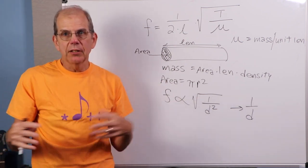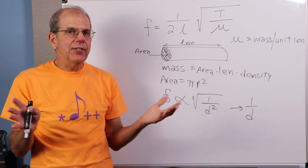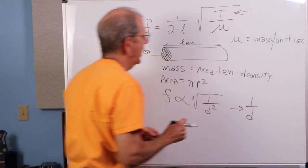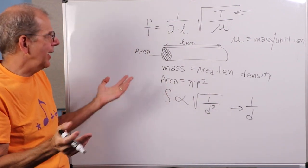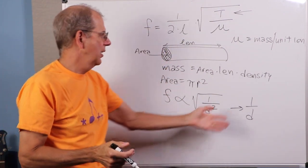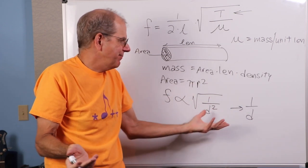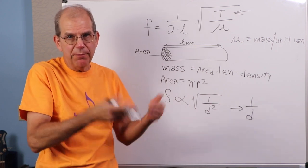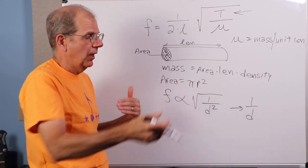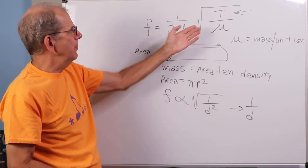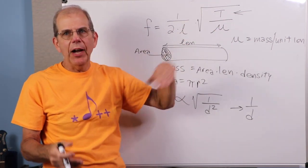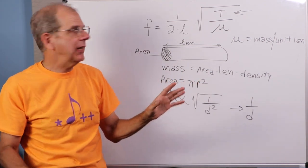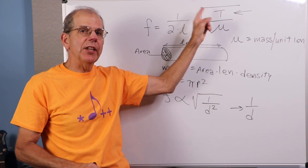I can pull all those little things out, like the density and this pi. So, for a given length, some string length, some given density, some string construction material, this is what we wind up with. What's the square root of one over the square of something? They basically cancel. Because one over D squared is the same as one over D times one over D, and the square root of that is just one over D.